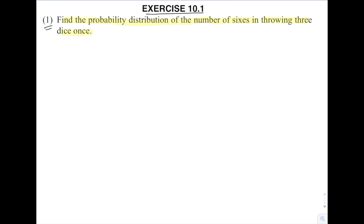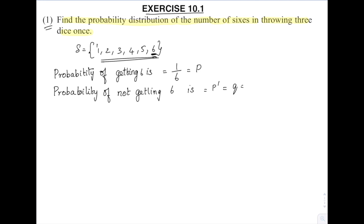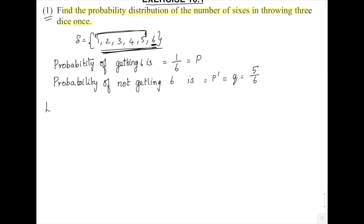Firstly, we know that there are six numbers on a die, so S = {1, 2, 3, 4, 5, 6}. The probability of getting a six is 1/6, which we mark as p. The probability of not getting a six is p-dash, which we mark as q, equal to 5/6.